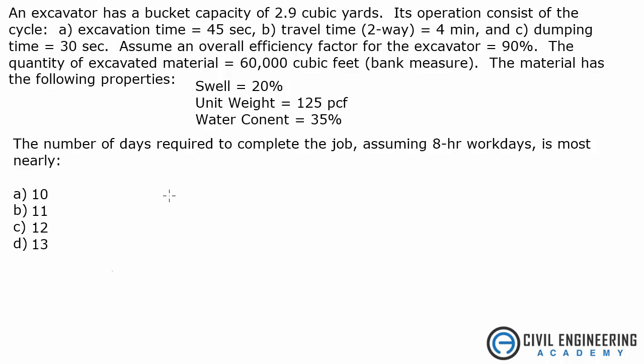An excavator has a bucket capacity of 2.9 cubic yards. Its operation consists of the cycle: excavation time 45 seconds, travel time 2-way of 4 minutes, and dumping time 30 seconds. Assume an overall efficiency factor for the excavator of 90%, the quantity of excavated material 60,000 cubic feet, which is bank measure. The material has the following properties: swell of 20%, unit weight of 125 PCF, and water content 35%. The number of days required to complete the job, assuming an 8 hour work day, is most nearly what?